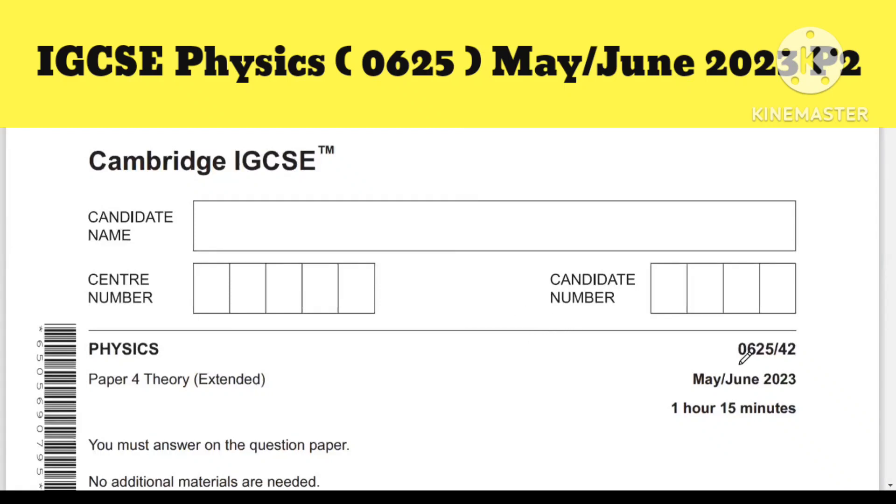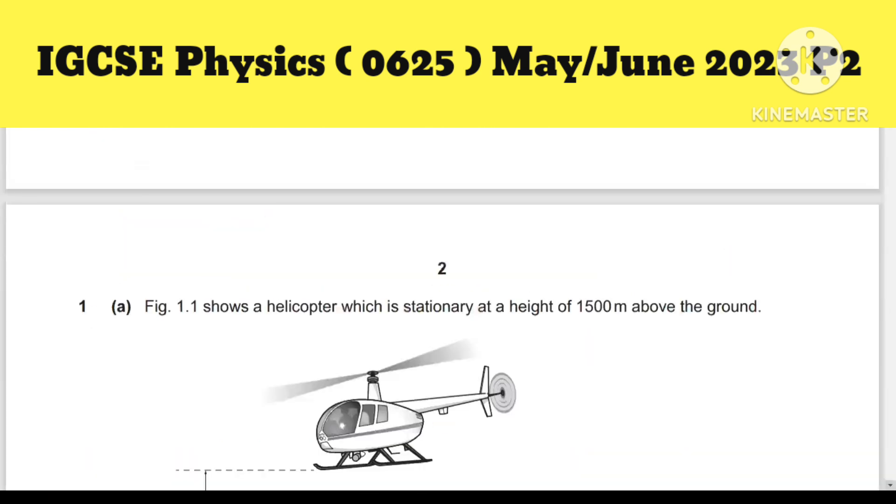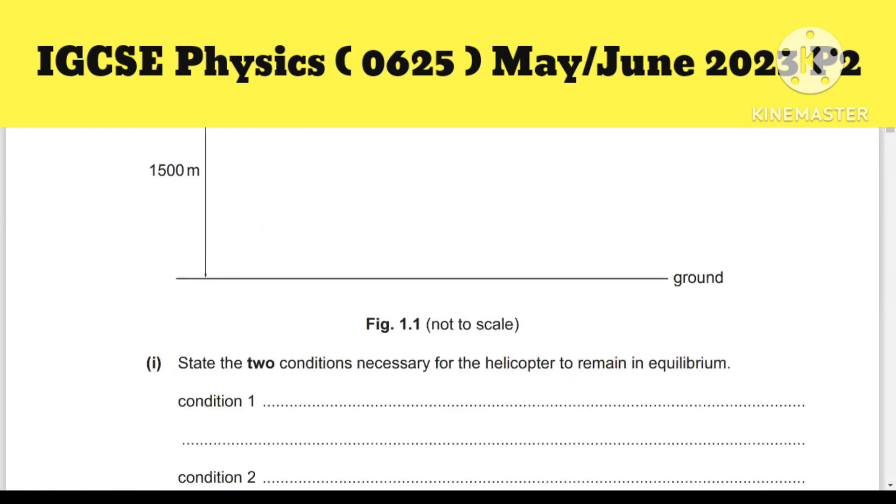Hello everyone. Today we will solve paper theory for Extended 0625 Variant 2, May June 2023. This is the latest paper, so let's solve it. Question number one: a helicopter.